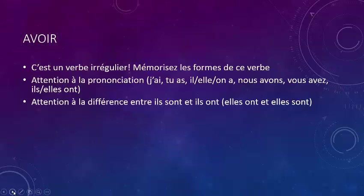Also be careful with the difference between 'they are' and 'they have': ils sont and ils ont. Ils sont is être — they are. Ils ont is avoir — they have. With être it makes the S sound: sont — you are pronouncing the S at the beginning of the verb. With avoir you're doing liaison, and that gives you the Z sound before the verb: ils ont. Same thing with the feminine: elles ont, elles sont. Careful.